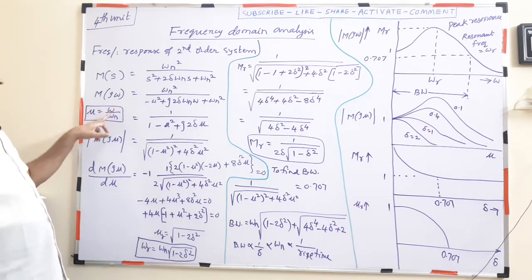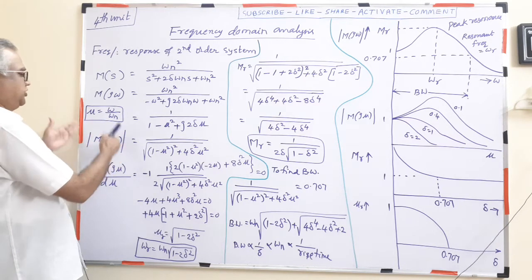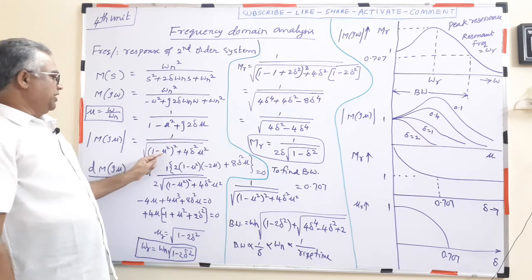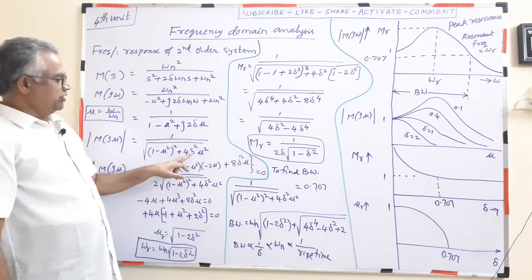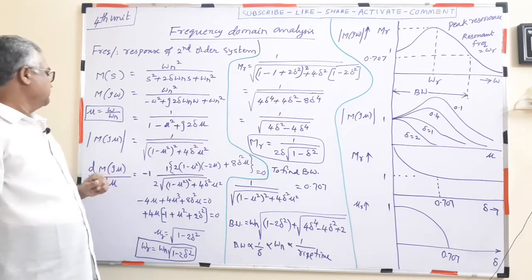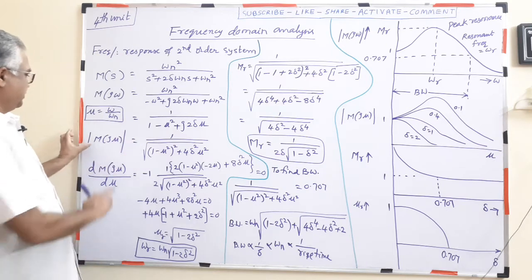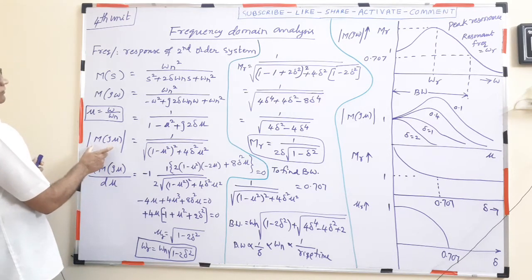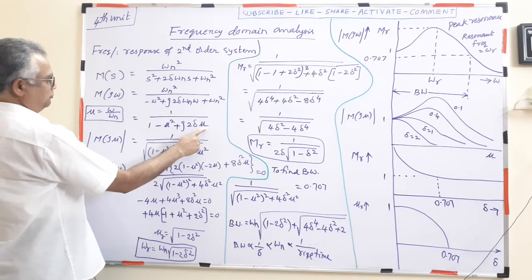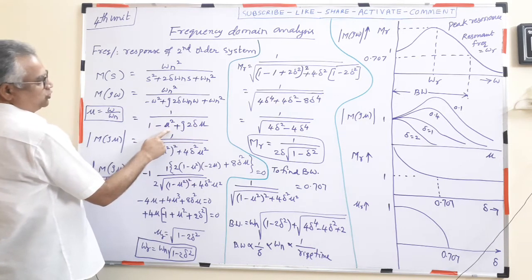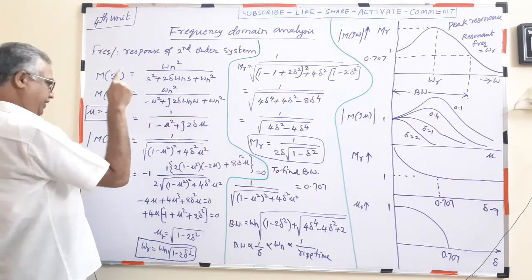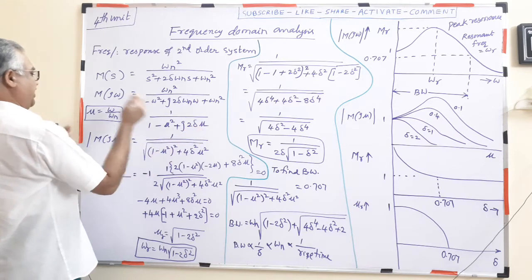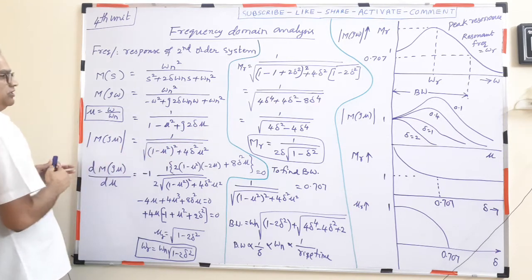Here μ = ω/ωn. The magnitude of M(jμ) is 1 divided by the square root of [(1 − μ²)² + 4δ²μ²]. The phase angle is −tan⁻¹(2δμ / (1 − μ²)). As μ changes, both the magnitude and the angle will change — we need to find how.